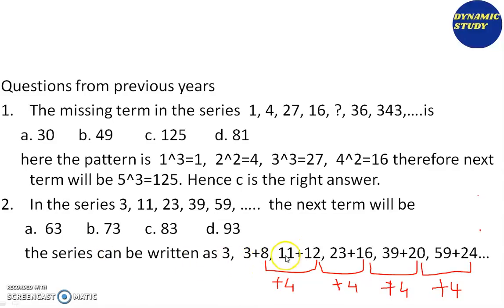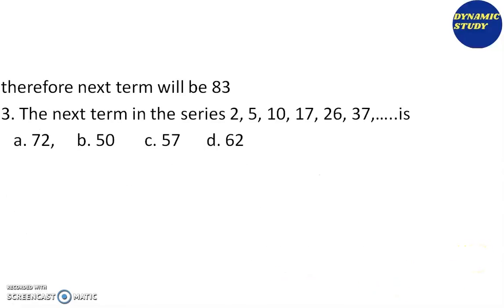If you want to write this series: 3, 3+8, 11+12, 23+16, 39+20, 59. The numbers being added are 8, then 12, then 16, then 20. If you look at it, there is 4 more being added each time. So we have +8, +4 more gives +12, +4 more gives +16, +4 more gives +20. Further ahead, this series is going to increase by adding 4 more. The next term: 59+24=83. Therefore, the next term will be 83.